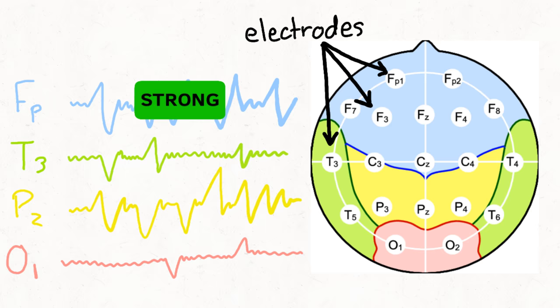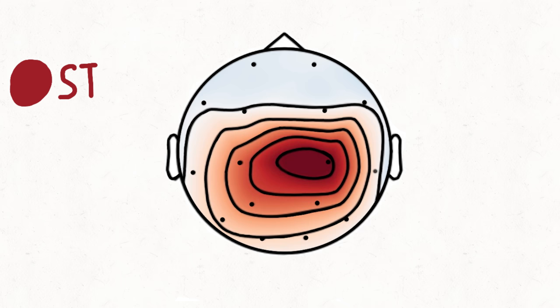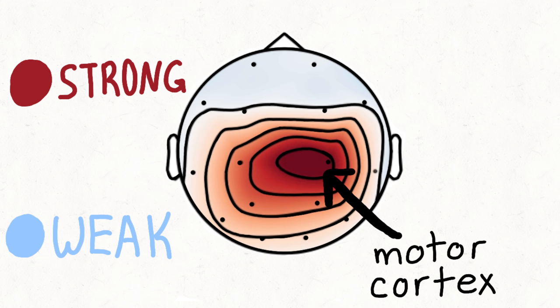For example, look at this heat map of the brain depicting EEG signal strength, with red representing a strong signal and blue representing a weak one. The red signal is centered around the motor cortex region of the brain. Based on this, we can assume the person is thinking about motion.